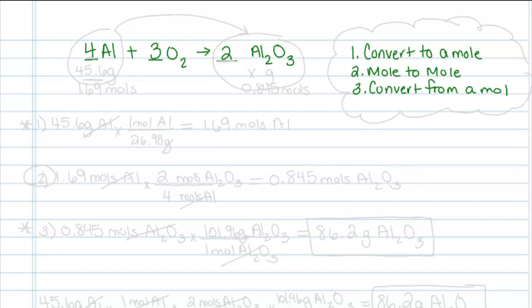Sometimes it is helpful within the problem to start listing out what you are given and what you need underneath the equation. So for example, I am given that I have 45.6 grams of aluminum. And I want to know how much aluminum oxide. So I am going to put x grams over here.